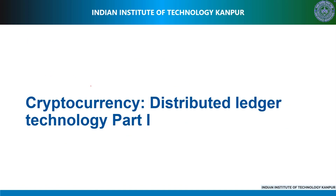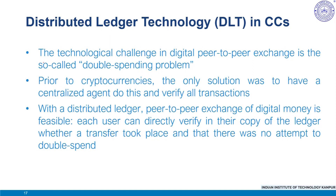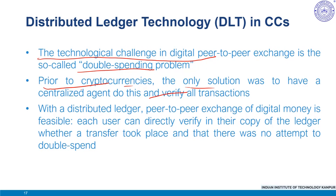In the next two videos, we'll discuss the application of distributed ledger technology in the case of cryptocurrencies. The technological challenge in digital peer-to-peer exchange is the so-called double spending problem. Any digital form of money is easily replicable and can thus be fraudulently spent more than once. Digital information can be reproduced more easily than physical banknotes, so solving the double spending problem requires at a minimum that someone keeps a record of all the transactions.